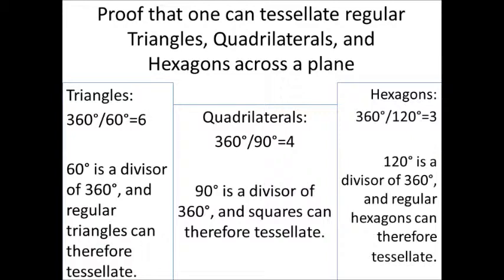360 degrees divided by the 120 degrees that makes up each interior angle of a regular hexagon gives us 3, showing us that 120 is a divisor of 360 and proving that hexagons can tessellate.